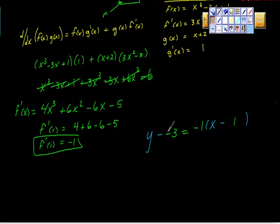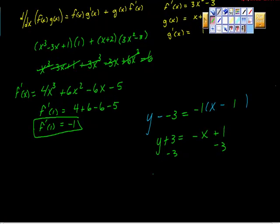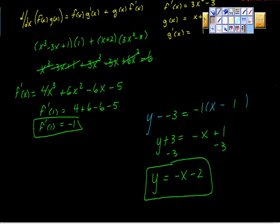Some quick algebra, this turns into y plus 3 equals, I'm going to distribute this, so negative x plus 1. Negative times the negative is plus 1, so plus 1. Add negative 3 to both sides. And I believe the line tangent is the line y equals negative x minus 2. This is the line tangent to our curve at the point 1, negative 3.